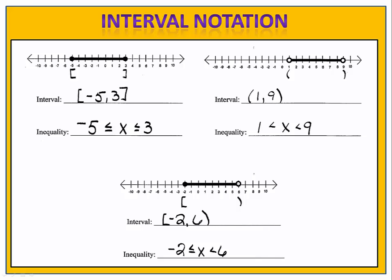Finally, on the last exercise, we have from negative 2 to positive 6. Negative 2 is a solid circle, which means it's included — we'll use a bracket. 6 has an open circle, which indicates it's not included — we'll use a parenthesis. We can write that using an inequality as shown on the screen.